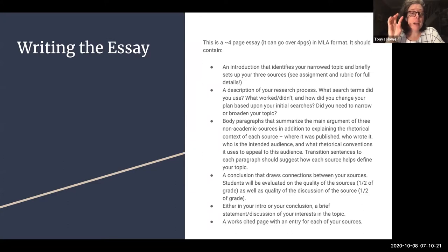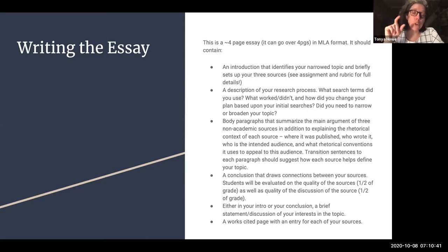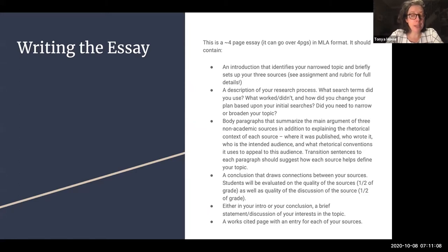You're going to have a collection of body paragraphs — one paragraph for each source or two paragraphs for each source. In your body paragraphs for each source, you're going to summarize the main argument of each source and explain and discuss the rhetorical context of each source. You could do that in one paragraph if you're really good at condensing your summary, or in two paragraphs. Then you're going to want a conclusion that draws connections between your sources, and somewhere — either in your intro or conclusion — a brief statement of your interest in the subject. Finally, a works cited page with an entry for each of your sources.